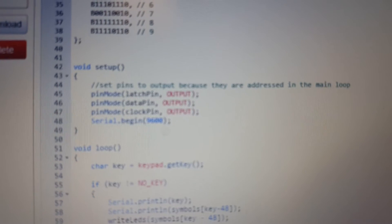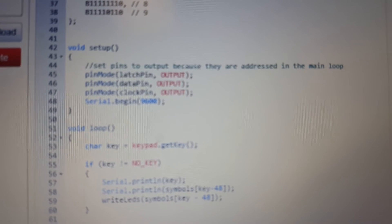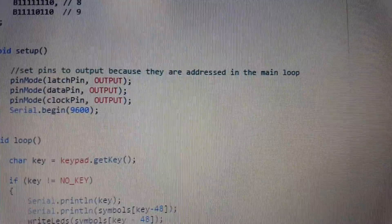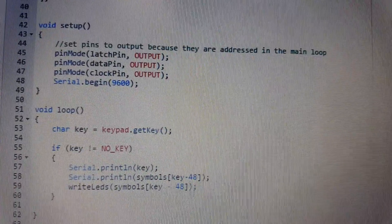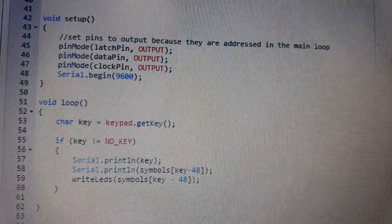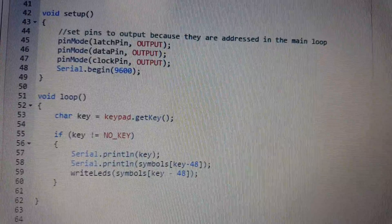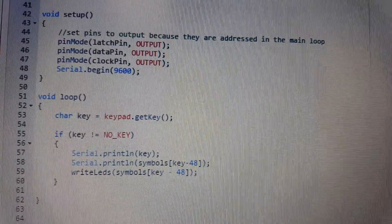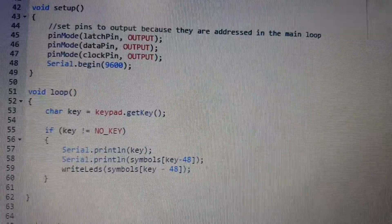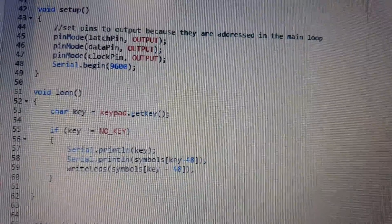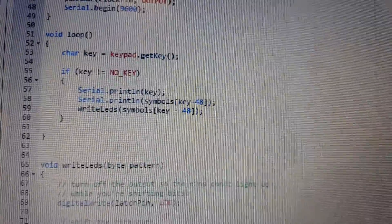In our loop, we basically call the getKeypad method which is part of the keypad library. If there is a key ready, then we call the writeLEDs subroutine. It does key minus 48, which performs the ASCII to integer conversion.